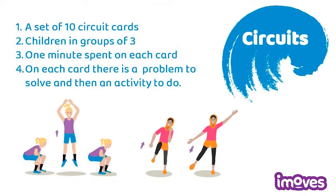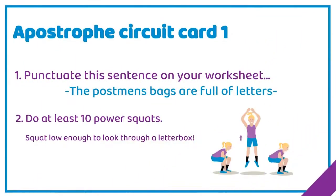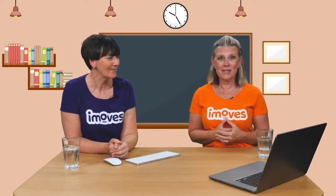The circuit concept involves different cards placed all around the classroom on the wall. Children move around and do the different activity on each card in small groups of about three or four, spending a couple of minutes at each station. You can use a timer or ring a bell to signal when it's time to change. This particular circuit is about punctuating sentences with apostrophes — specifically plural possession, where the apostrophe goes before or after the 's'.